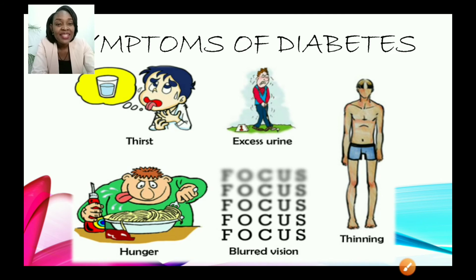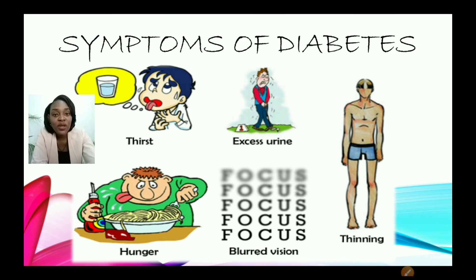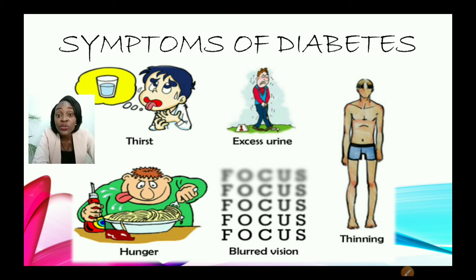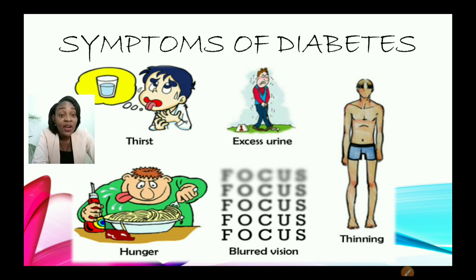Now, let us look at the symptoms — what persons would feel when they're diabetic. They may feel thirst, always thirsty. Excess urine. Thinning — you're losing weight even though you're eating normally. Also blurred vision and always hungry. So you're always hungry yet still losing weight, always thirsty, excess urine, and blurred vision. These are some of the symptoms that may hint to you to go get checked out to find out if you are diabetic. So you have control over these issues — it's for you to consume healthy, good calories and also to exercise.